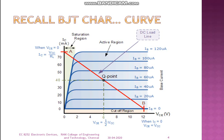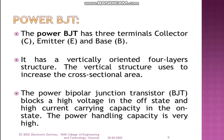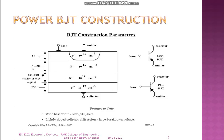Now we move to the power BJT. Similar to the BJT, the power BJT has three terminals: emitter, base, and collector. The key difference is that it has a vertically oriented four-layer structure. The vertical structure is used to increase the cross-sectional area. Looking at the vertical structure of the power BJT, you can see it has four regions: starting from the bottom, you have the collector, then the collector drift region in the middle.